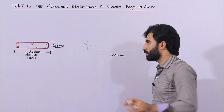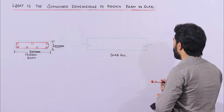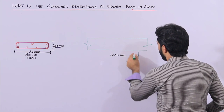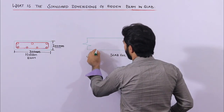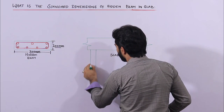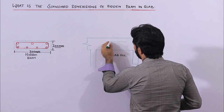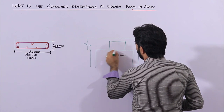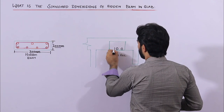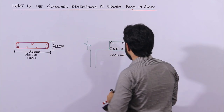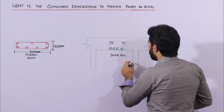Now let's move to the steel reinforcement. But before that — as mentioned, if the span between RCC columns is large, here you can see the supports and the steel reinforcement layout. The hidden beam is provided between these supports.